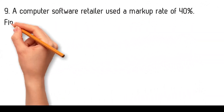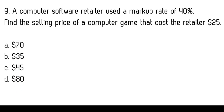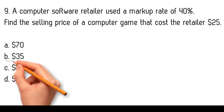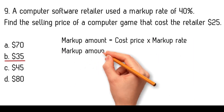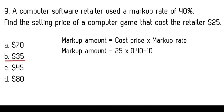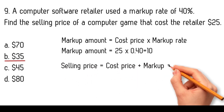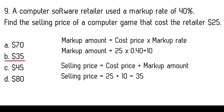A computer software retailer used a markup rate of 40%. Find the selling price of a computer game that cost the retailer $25. Options: $70, $35, $45, $80. To determine the selling price: markup amount equals cost price times markup rate, so markup amount equals 25 times 0.40 equals $10. Selling price equals cost price plus markup amount, so selling price equals $25 plus $10 equals $35.